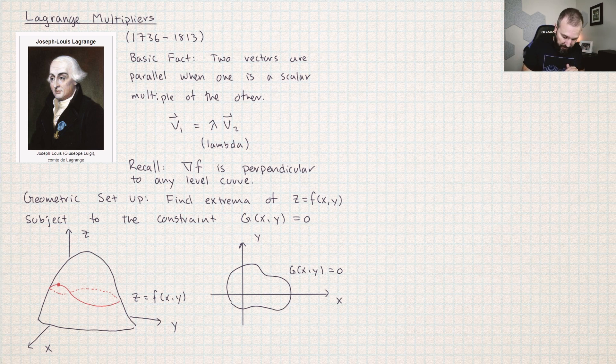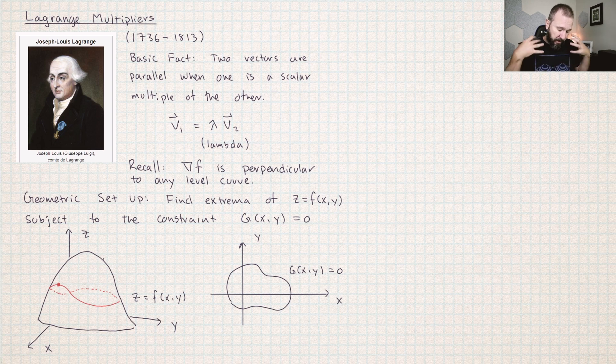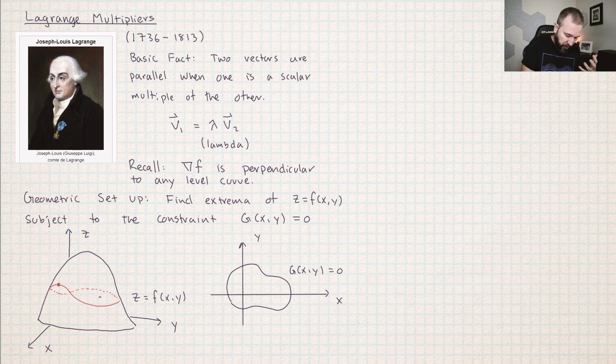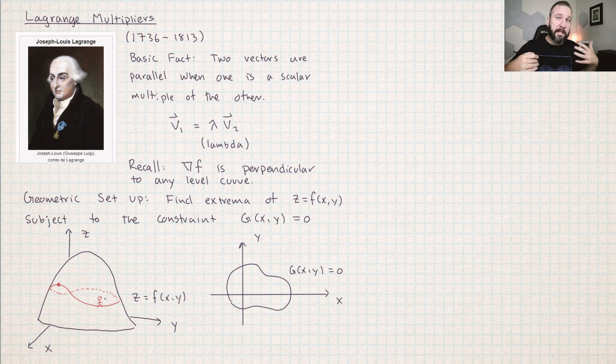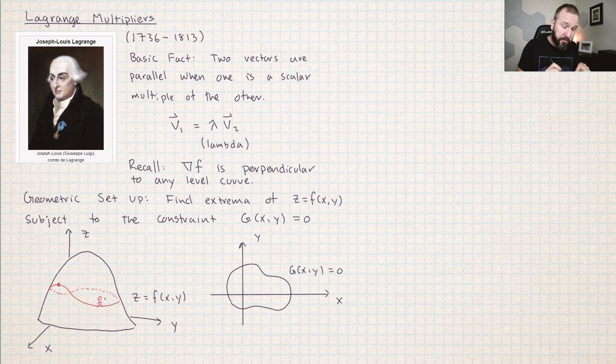I like to imagine myself walking around a path along the side of a hill. The goal is not to find the top of the hill, but if we restrict ourselves to always being on the path, where is the tallest point on the hill that is on that path?